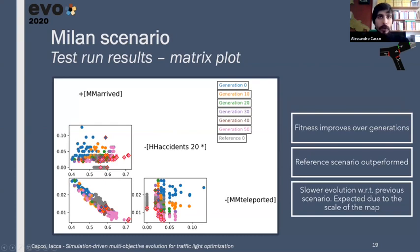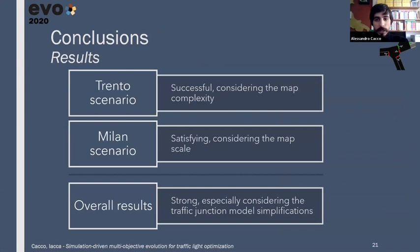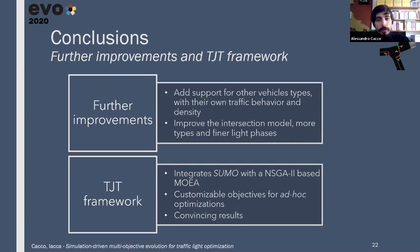And so, we can draw some conclusions. Observing the experimental results, we can say that both the Trento and Milan runs have been successful, both for the complexity of the first and the scale of the second, having a more or less similar result between the different runs on a specific map. Overall, the results are good, in particular, considering the noticeable simplifications that we made for the traffic junctions themselves. For what concerns the framework, further improvements may be adding more vehicle types, like trucks and buses with custom densities, and also adding more intersection types to the model in order to be more realistic, to have a more realistic behavior.